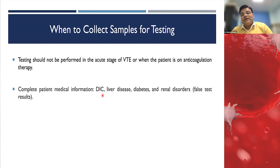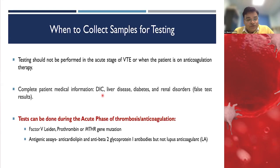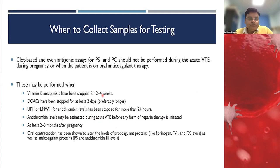In DIC, majority of factors are consumed. In liver disease, there is reduced synthesis of protein C, protein S, and other liver-produced proteins. So what tests can we do during the acute phase or when the patient is on oral anticoagulant? PCR-based testing such as factor V Leiden mutation, prothrombin gene mutation, or MTHFR can be performed. Antigenic assays like anticardiolipin antibody and anti-beta-2 glycoprotein antibody can also be done, but not lupus anticoagulant.